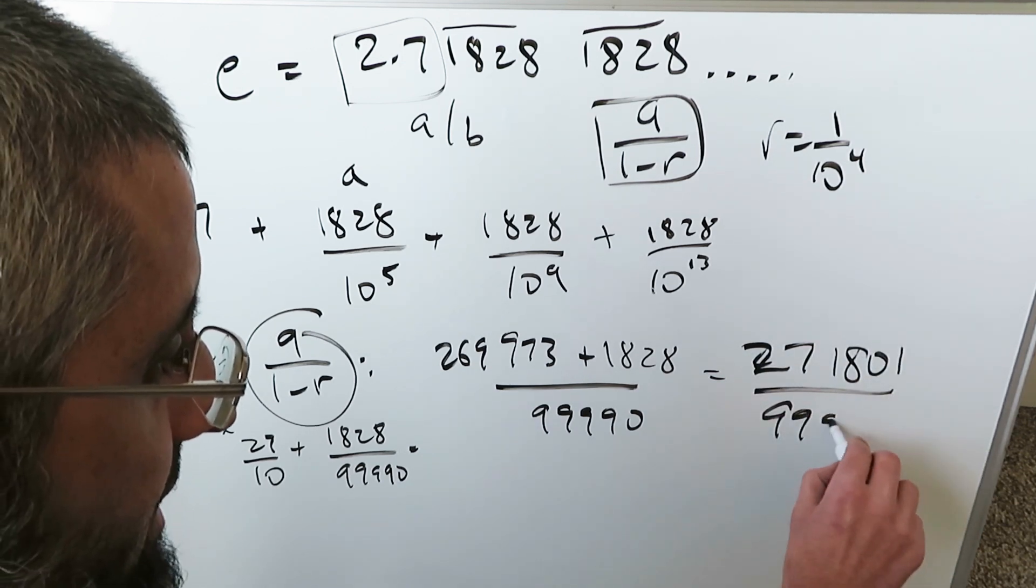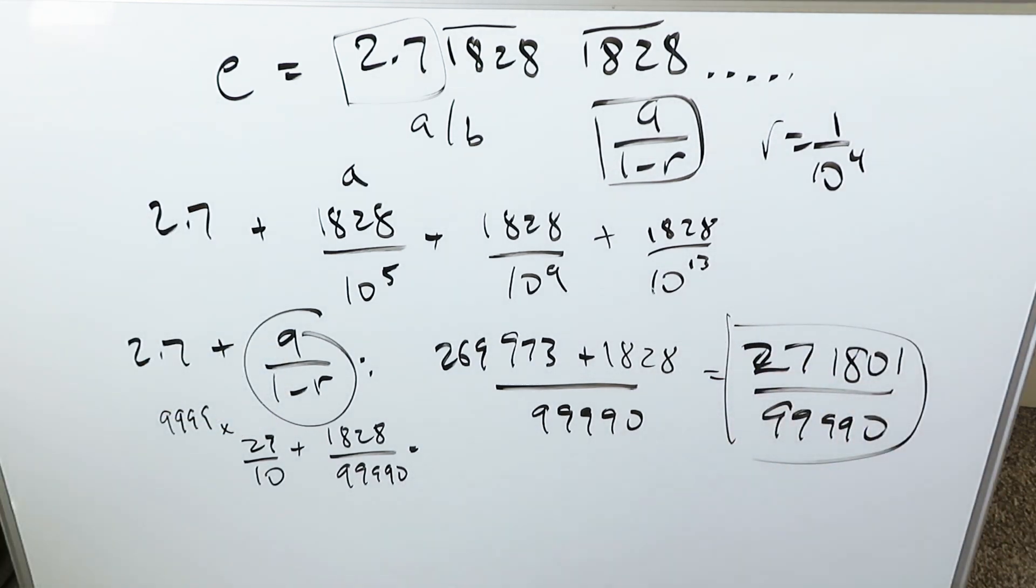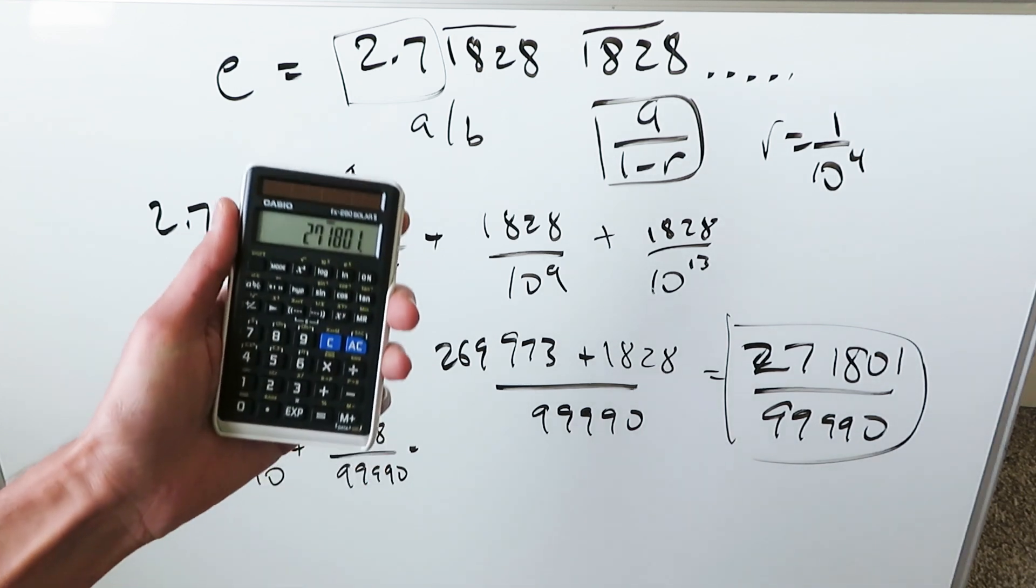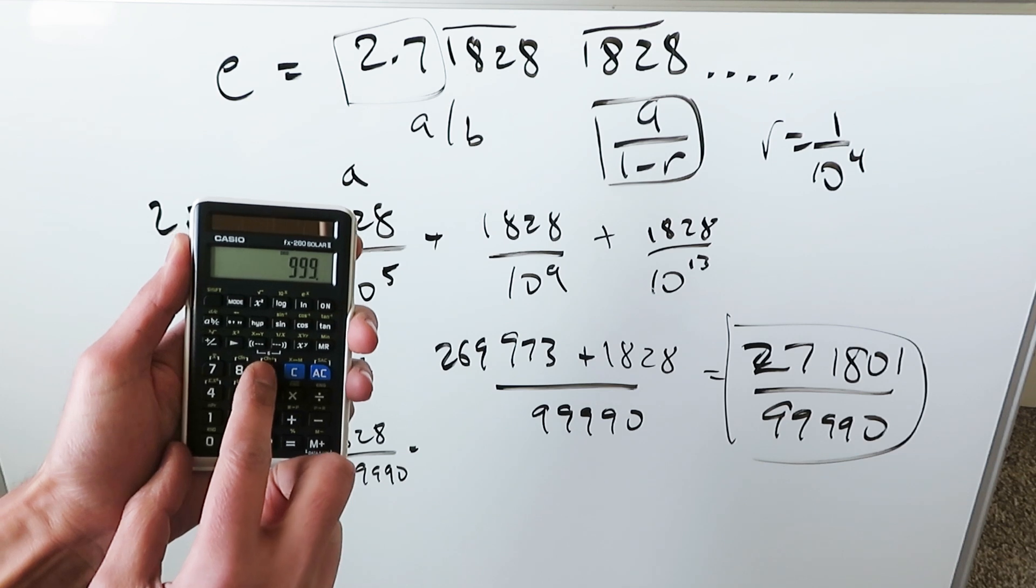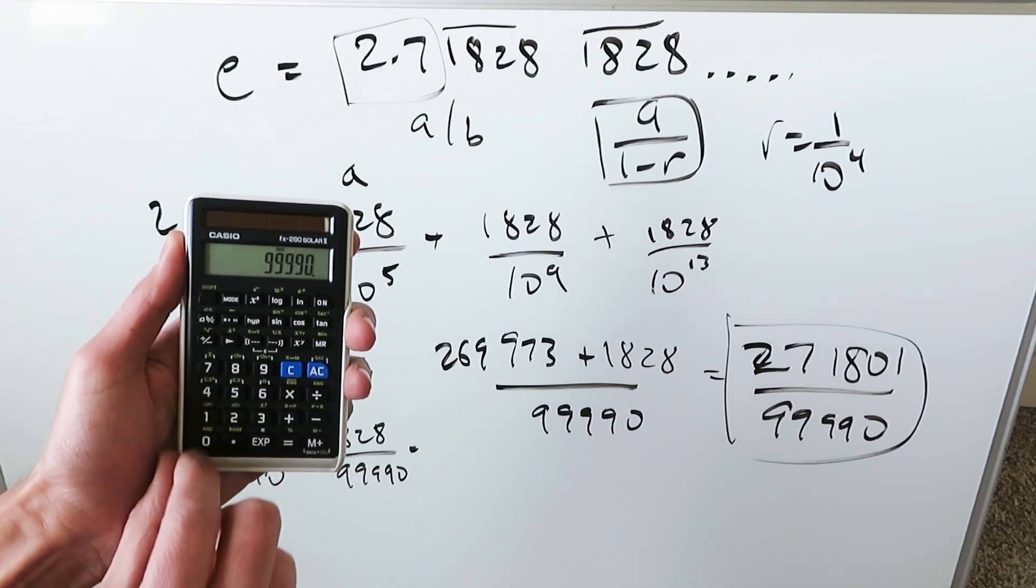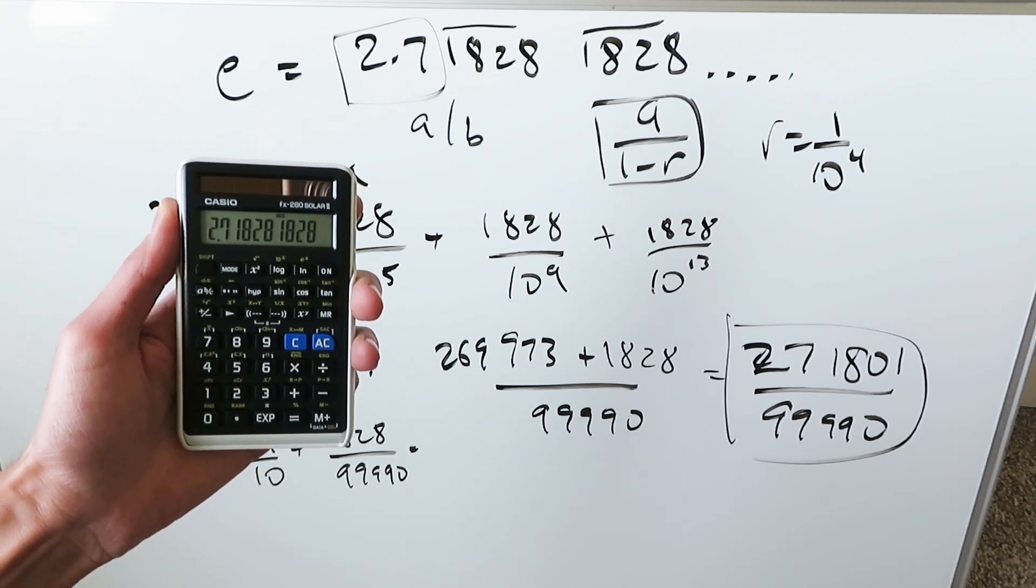by 99,990. Here is my rational fraction which will give me that. And we will test it out and I'll show it to you: 271,801 divided by 99,990, and look what we get: 2.71828 1828 1828... repeating. And we're done and it's good. Everything here coming from the concept of infinite geometric series for the part